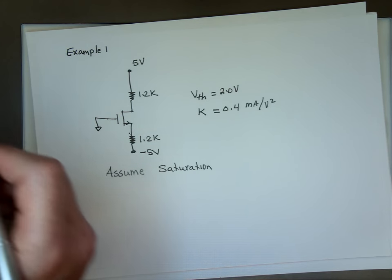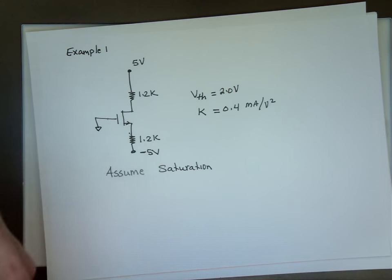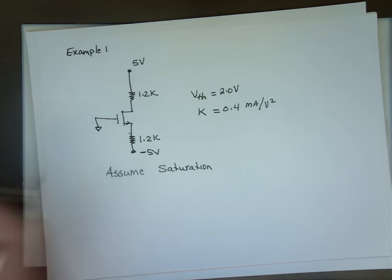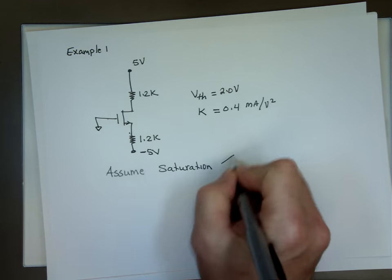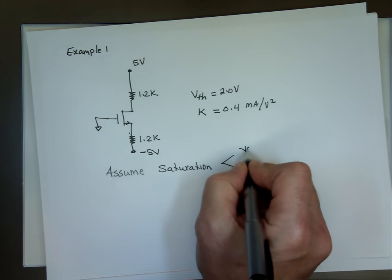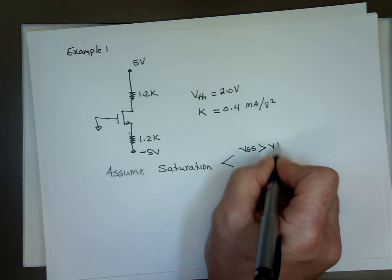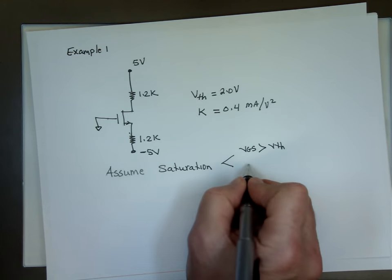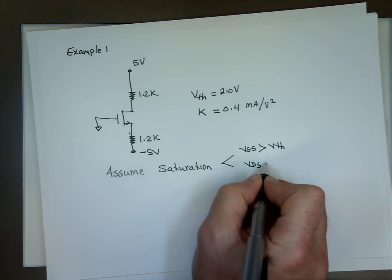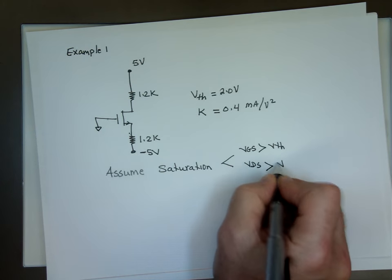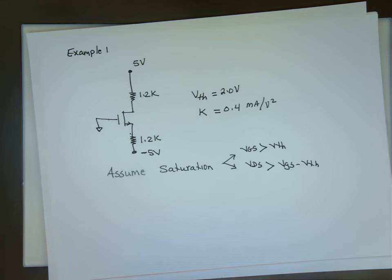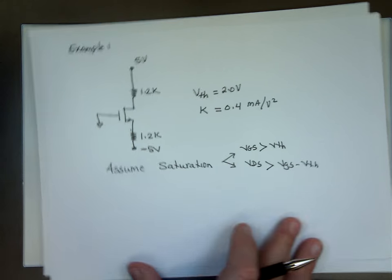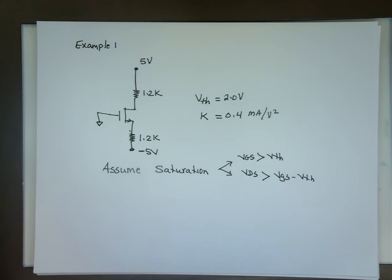Which means I need to prove what? Two things for saturation. Where is our cheat sheet I had early? I threw it away somewhere. I need to prove that VGS is bigger than the threshold voltage. I also need to make sure that VDS is greater than VGS minus V threshold. Two things to prove. So let's take it. Let's go through it. And let's do this problem.